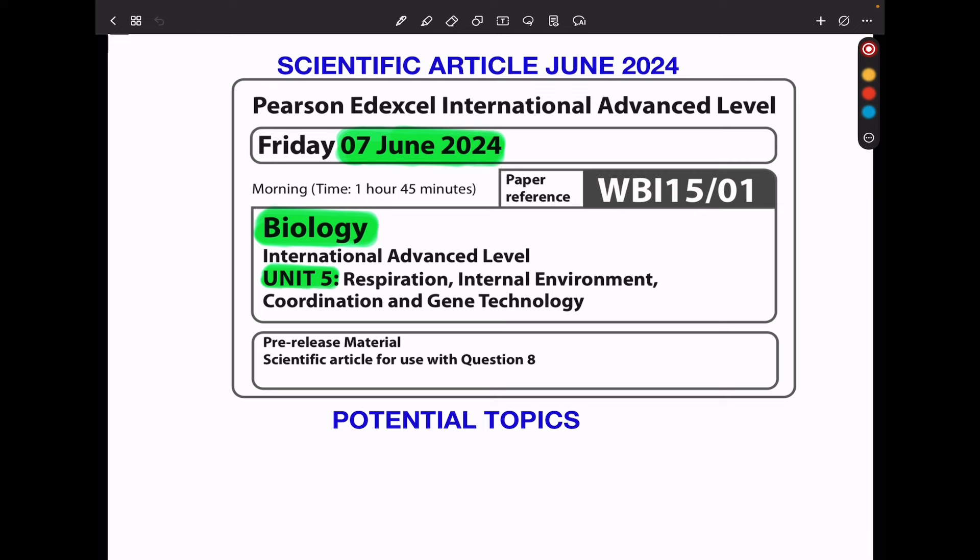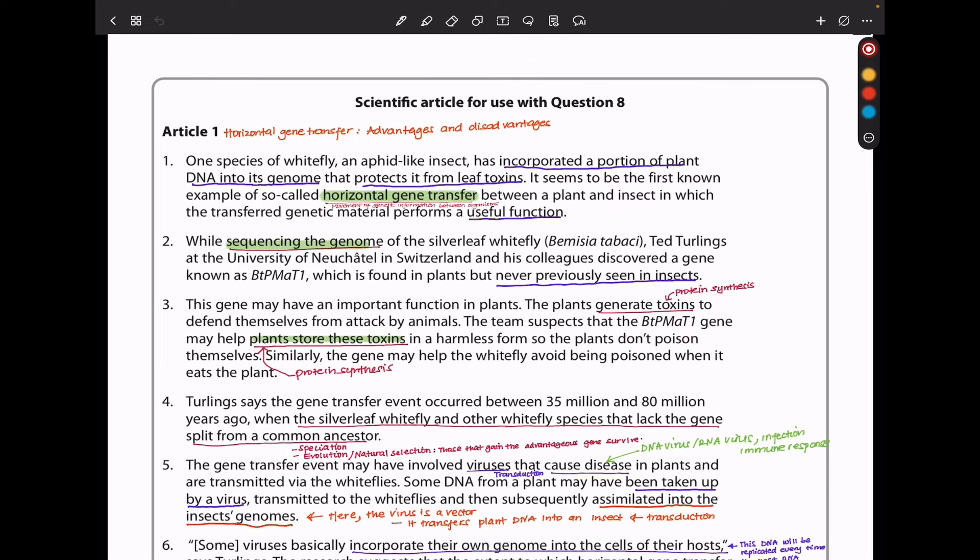Let's begin with the article. In this article we have three mini-articles, so I'll begin with the first one. And this is about horizontal gene transfer, looking at how it happens in nature, advantages as well as disadvantages.